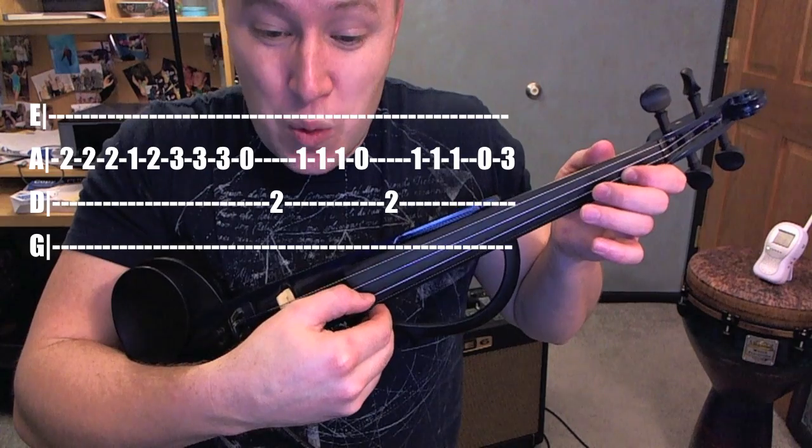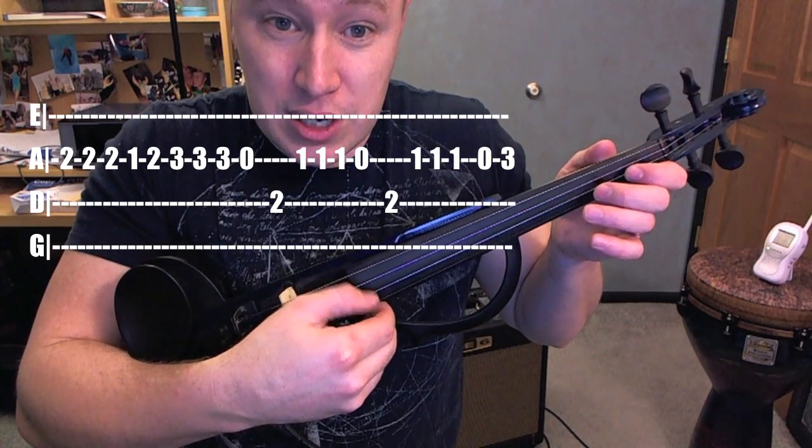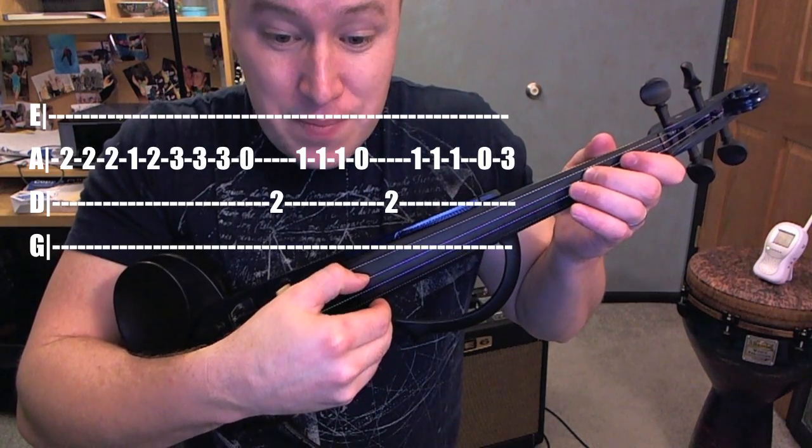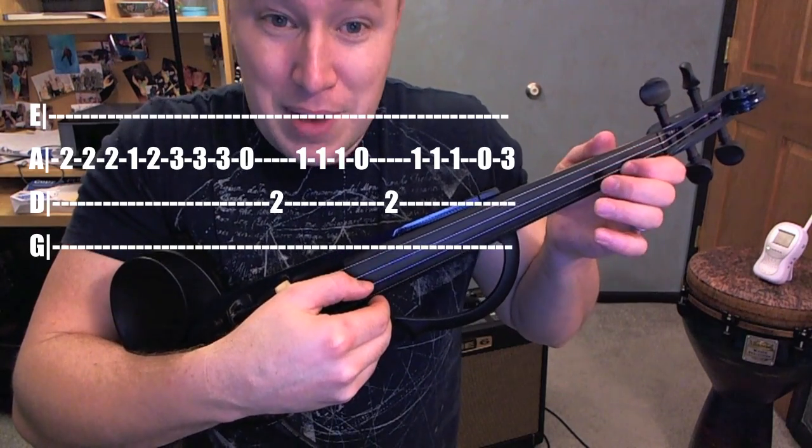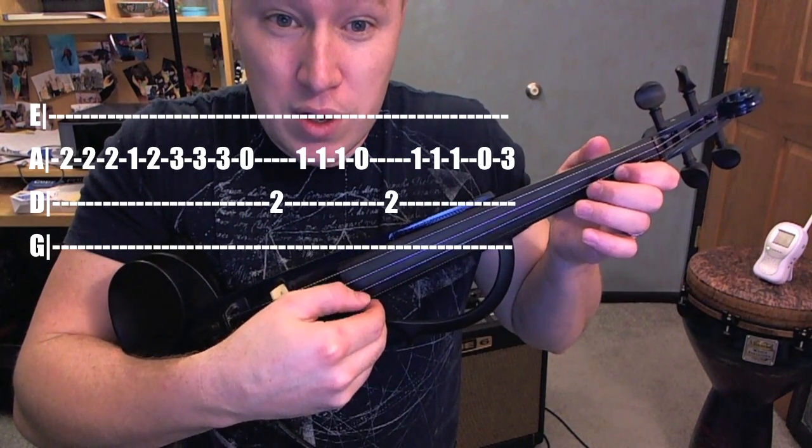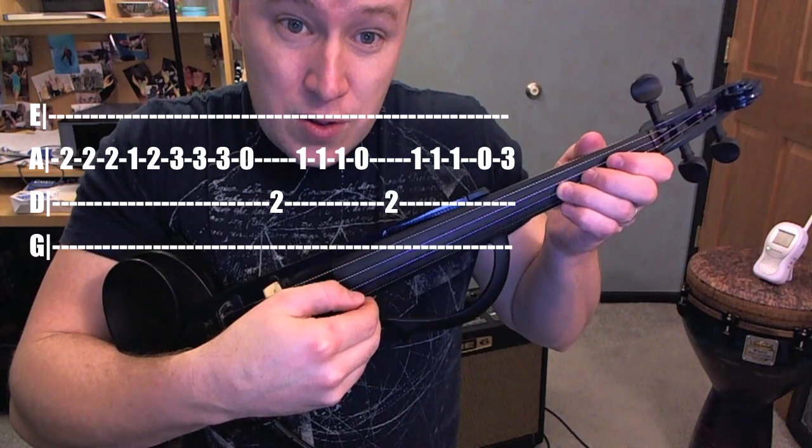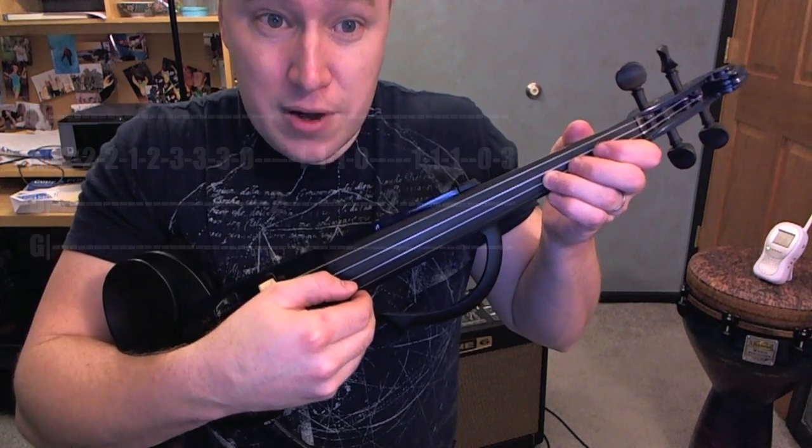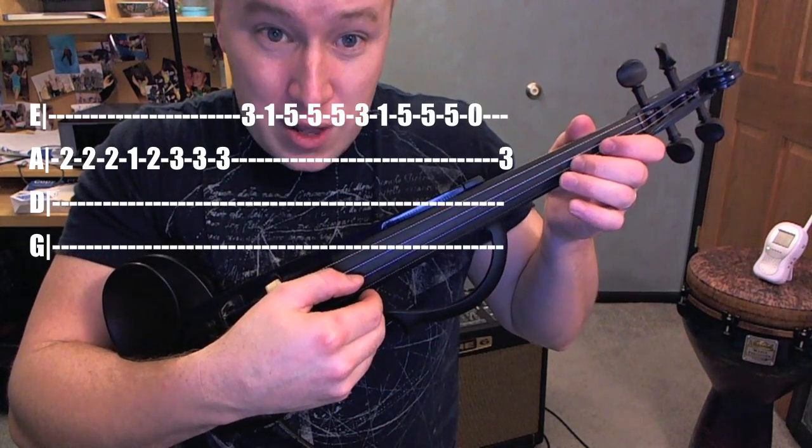To the second string: one, one, one, zero. To that second string again - or third string - back to the second string: one, one, one, zero, three with the ring finger. Then we're on to the next part, start from two.